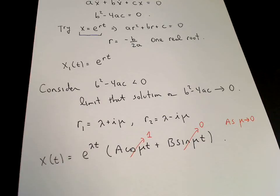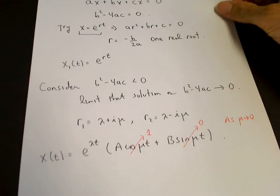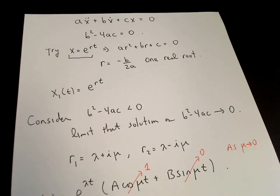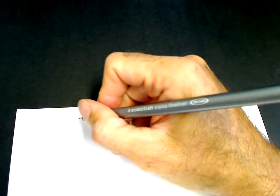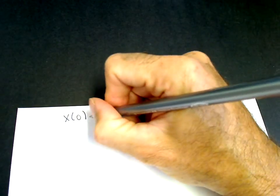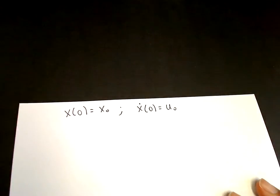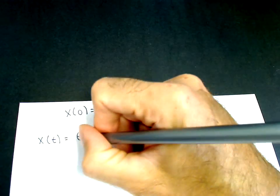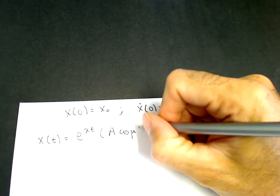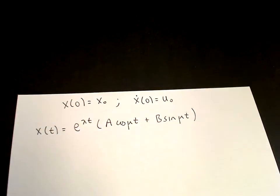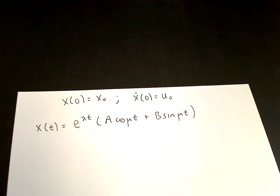We can only see this clearly if, instead of using a and b, we replace them with the initial conditions. So let's do that. Our initial conditions are x of 0 equals x-naught and x-dot of 0 equals u-naught. Our solution is x of t equals e to the lambda-t times (a cosine mu-t plus b sine mu-t), and we want to replace a and b with these initial conditions, then take the limit as mu goes to 0.